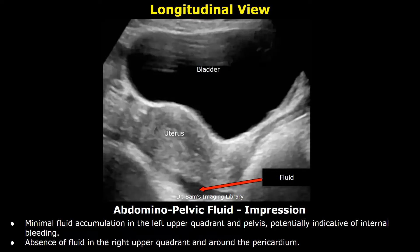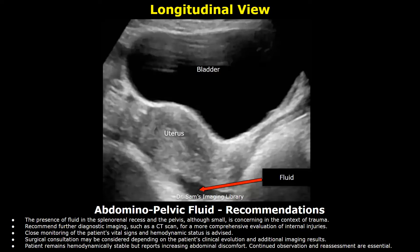Impression: Minimal fluid accumulation in the left upper quadrant and pelvis, potentially indicative of internal bleeding. Absence of fluid in the right upper quadrant and around the pericardium.